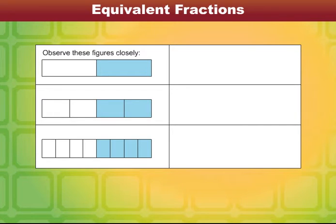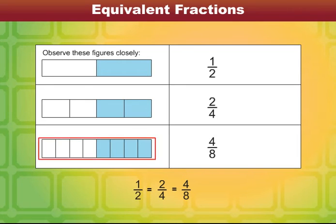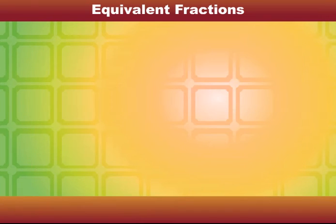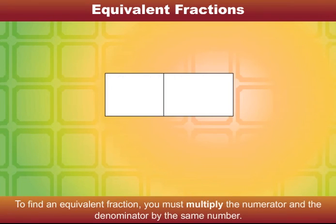Hence we call them equivalent fractions. Equivalent fractions are two or more fractions which have the same value. To find an equivalent fraction, you must multiply the numerator and the denominator by the same number.